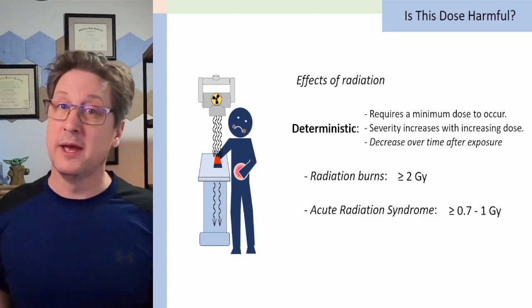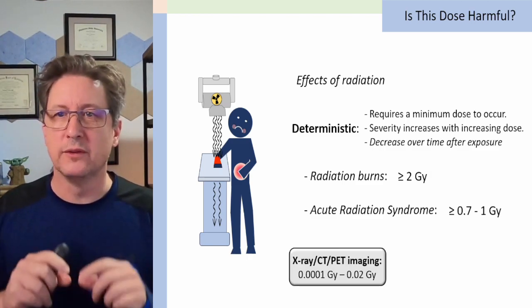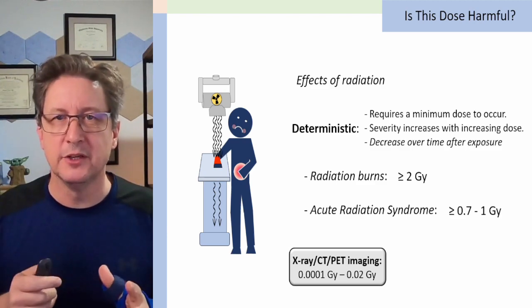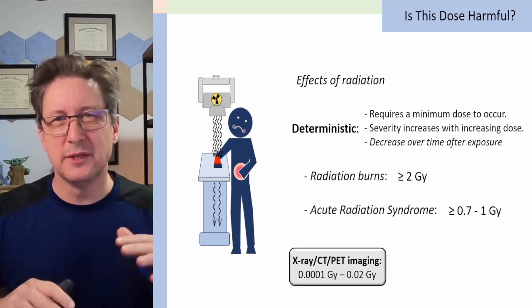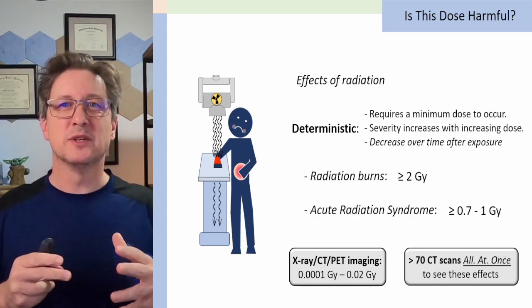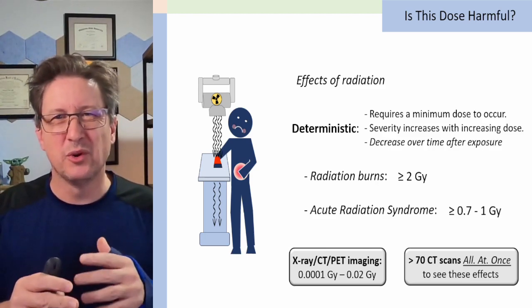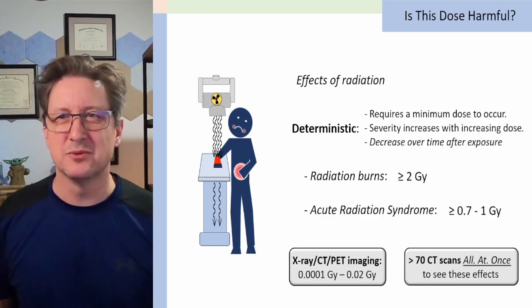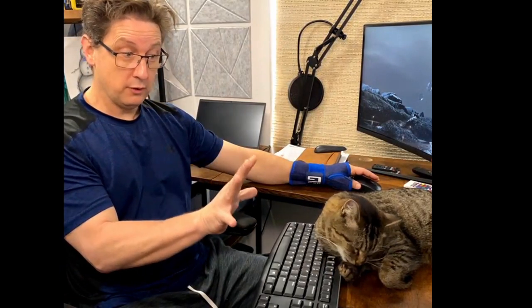Now, as your whole body dose goes up, the intensity of that sickness will get worse and worse. Think about this now. With an x-ray or a CT or a PET image, your dose is about 0.02 gray or less. So we're way below that threshold where these effects start to occur, orders of magnitude. In fact, you would need to receive 70 whole body CT scans all at once just to get to that lower threshold where you might start to feel sickness. So I don't think we're ever going to see these types of effects.